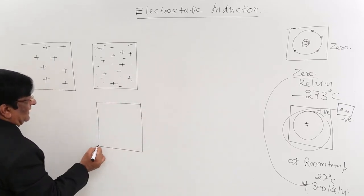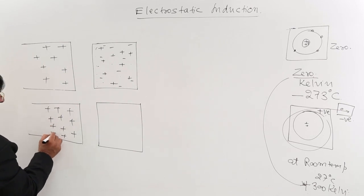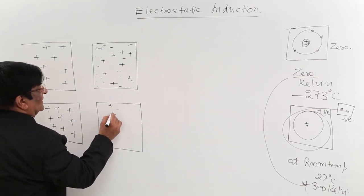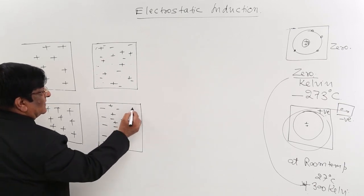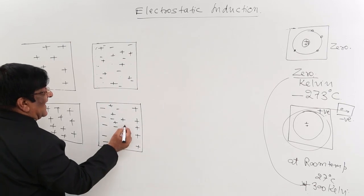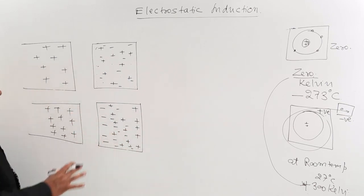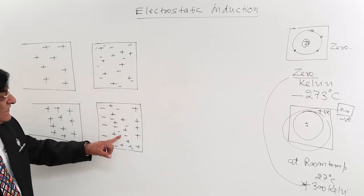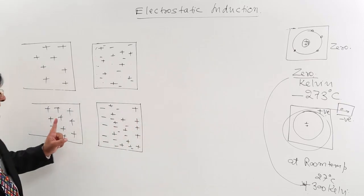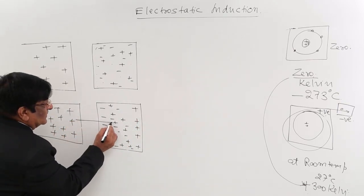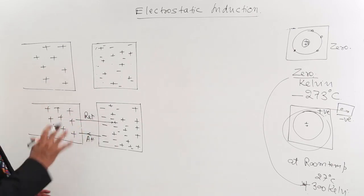So we find: in the corner near the rod, there are negative charges; in the far corner, there are excess positive charges. The rest remain distributed throughout. Negative charges try to spend more time on the near corner due to attraction, and positive charges try to spend time on the far corner due to repulsion from the rod.